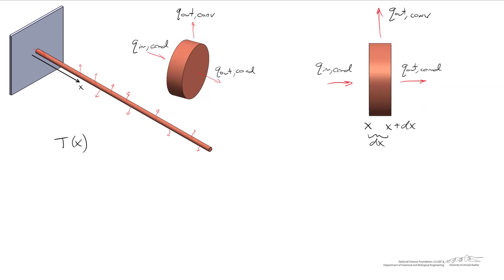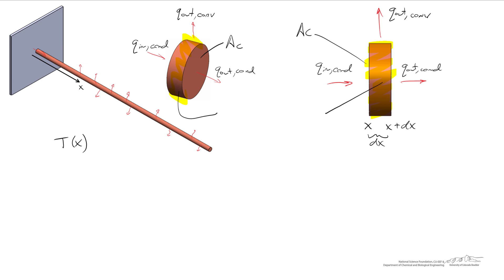For the sake of our analysis, let's focus on these two different views. We're going to need to define two different areas. One is the area associated with conduction — the cross-section of the extended surface — which we'll call A_C. The second area is the outer surface area, which we'll use for convection from the outer surface. This outer surface area is going to be the perimeter P times dx. For a cylinder, the perimeter would be pi times diameter, but I'm leaving it as P to keep this as general as possible.